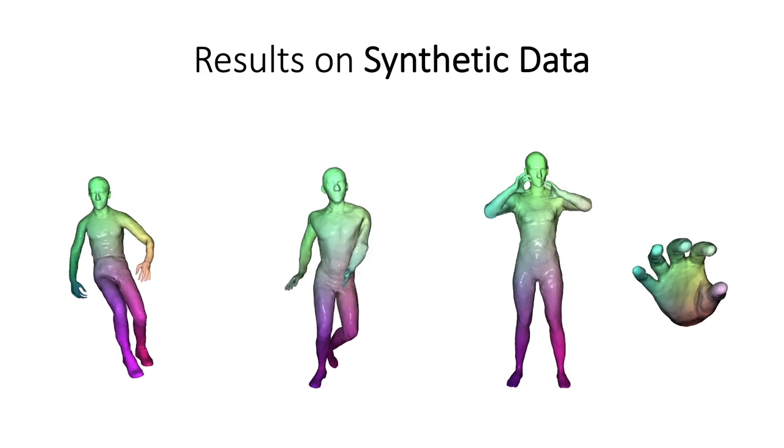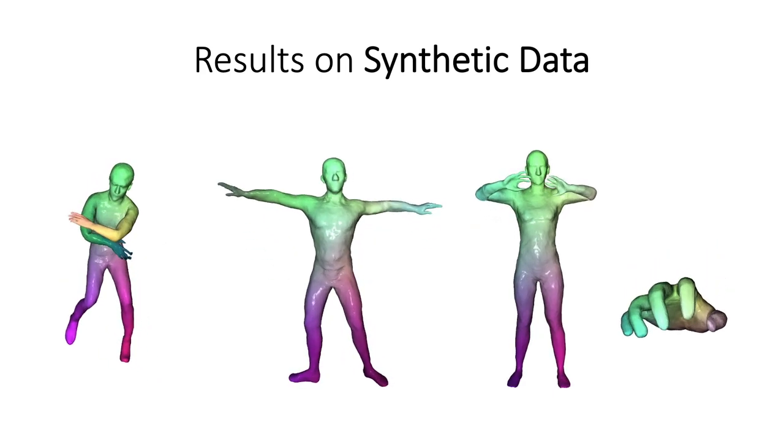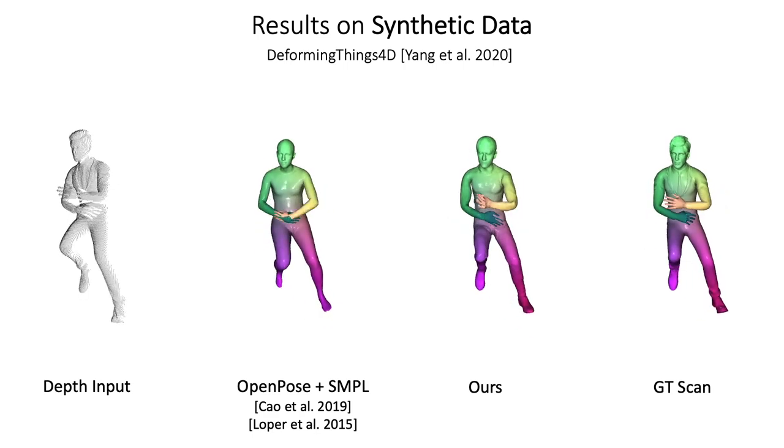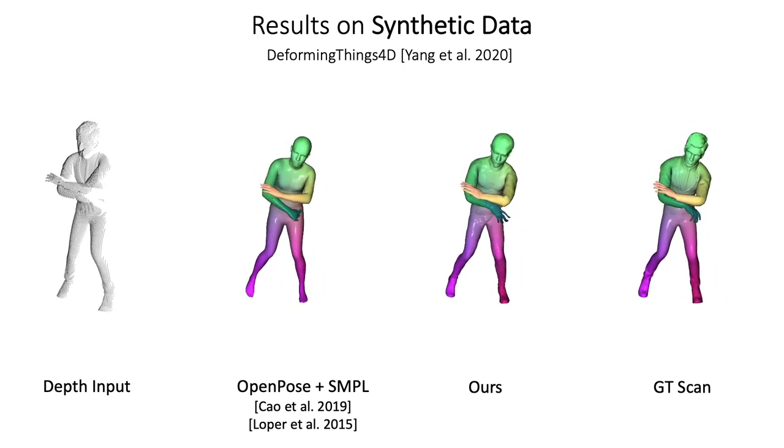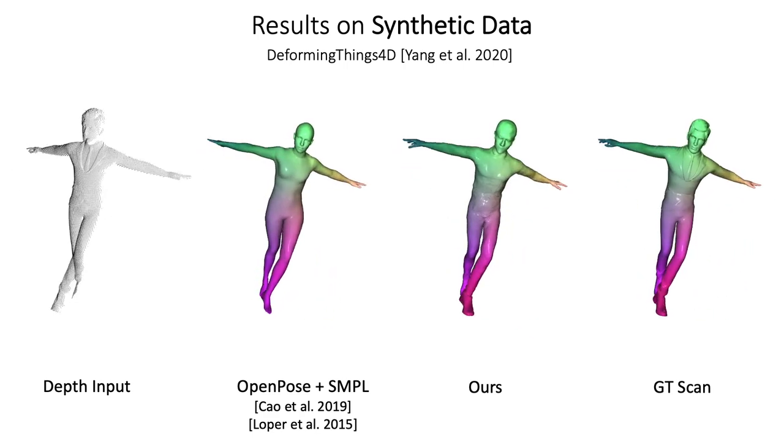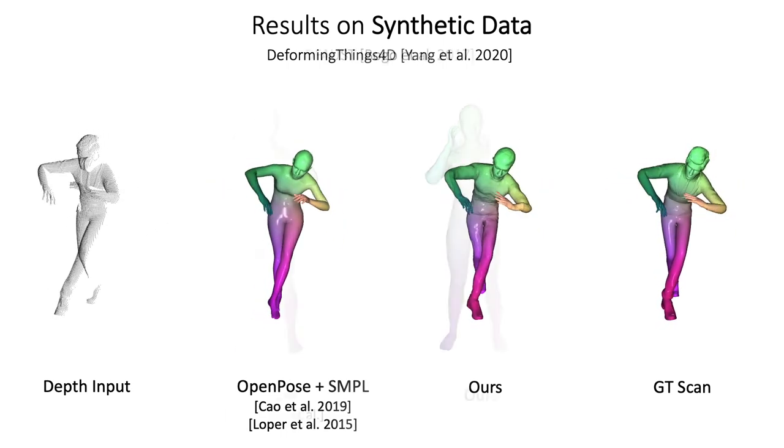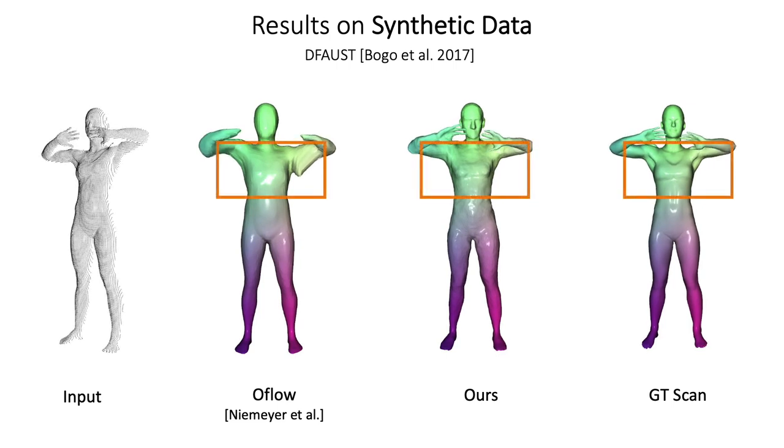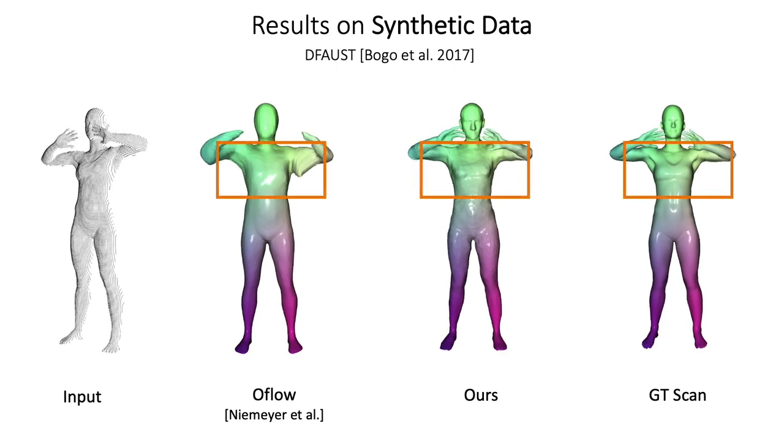Next, we show results on synthetic datasets. Here we compare again SMPL on a sequence from the DeformingThings4D dataset. We also compare with occupancy flow on the dynamic FAUST dataset, achieving better tracking while more accurately representing the shape.